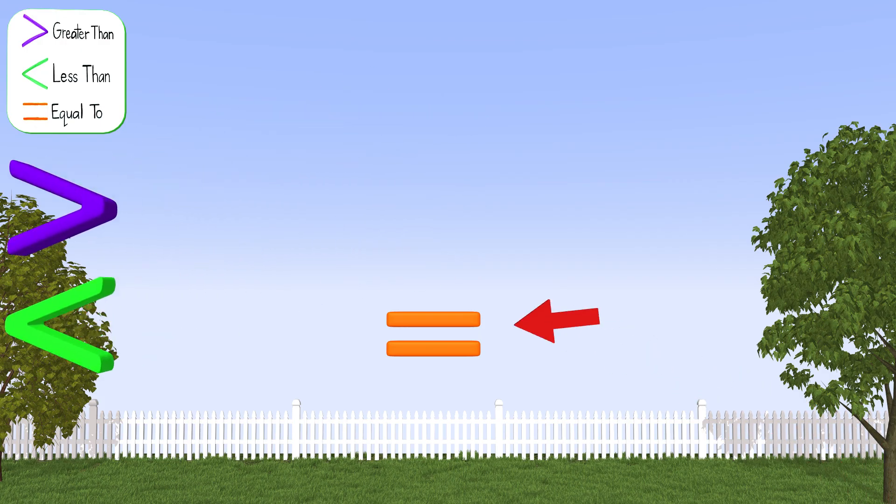For example, the sign on the bottom is an equal sign, and you have probably seen this before. Can you tell me what this symbol means? It means the same. That means whatever is on this side of the equal sign has to be the same as whatever is on this side for them to be equal.